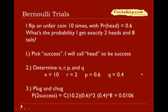Let's look at this example. I flip an unfair coin 10 times, and the probability of heads is 0.6. We want the probability of getting exactly 2 heads and 8 tails. The very first thing you should do when you see a Bernoulli trial problem is to pick success. In this situation, I'm going to call heads to be success — you could call tails if you want, and the result will be the same.